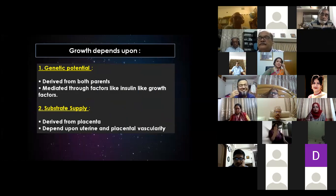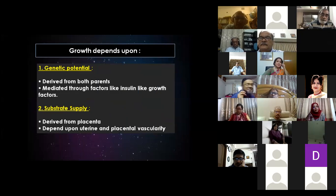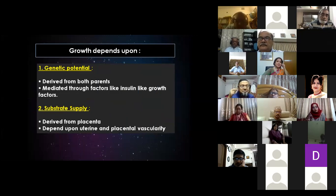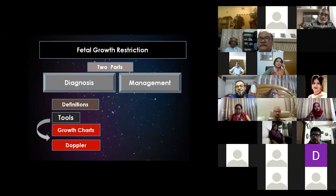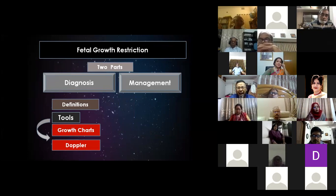Growth depends on growth potential, which is derived from both parents, and also on the substrate supply derived from the placenta and on uterine and placental vascularity. Regarding growth restriction, I will divide it into two parts: diagnosis and management. To diagnose, we need to define FGR, and to define FGR we need specific tools such as growth charts and Doppler.